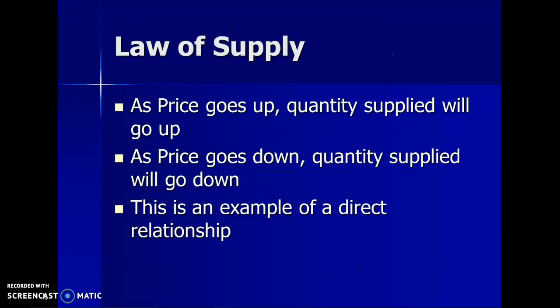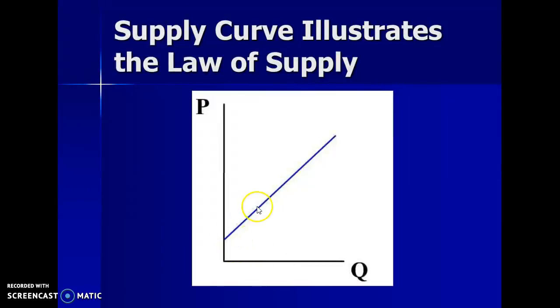Most of the test is about microecon. Let's start with supply. The law of supply says as price goes up, quantity supplied will go up; as price goes down, supply goes down. It's a direct relationship. The reason is producers want to make money — it's a profit motive. As the price of goods goes up, they want to supply more. As price goes down, they won't produce as much. The supply curve is a positively sloping curve that illustrates that.